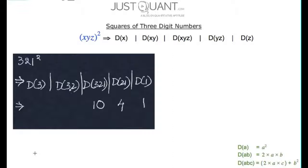Next, duplex of 32 is 2 times 3 multiplied by 2, which is 12. And finally, duplex of 3 is 3 squared, or 9.